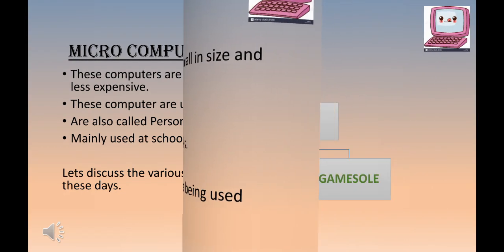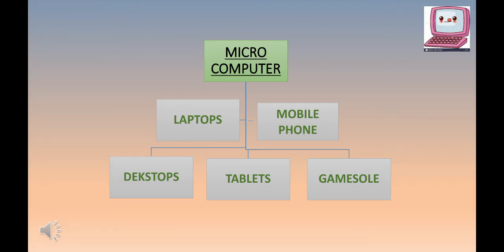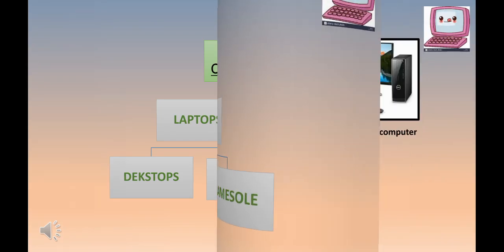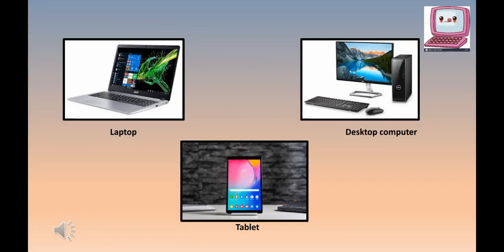This chart will make clear the five types of microcomputer being used these days: laptops, desktops, tablets, mobile phones, and game consoles. Here are images of the first three — laptop, desktop computer with CPU, mouse, and keyboard, and tablet, which nowadays every student is using for reading books or playing games.